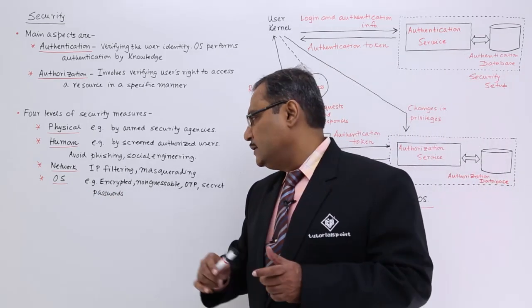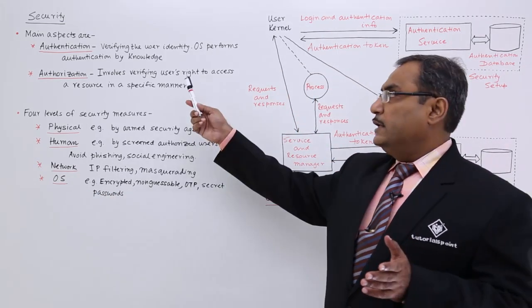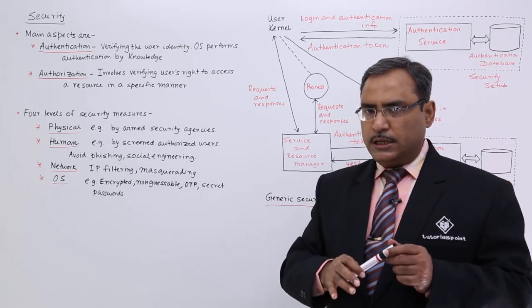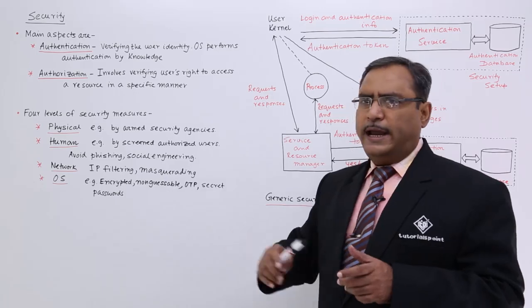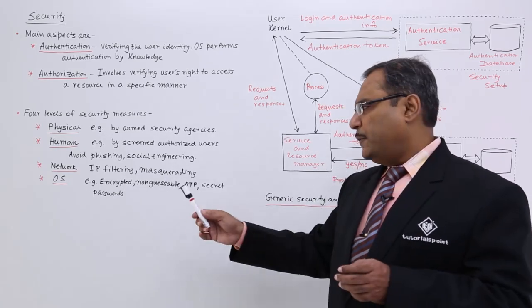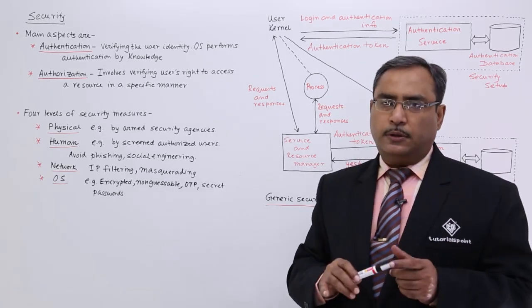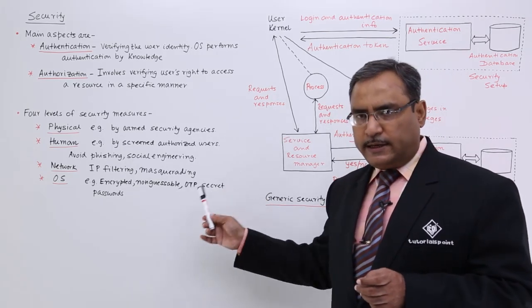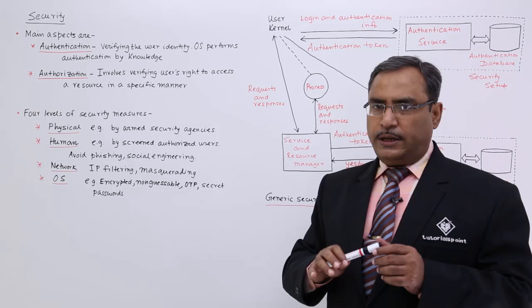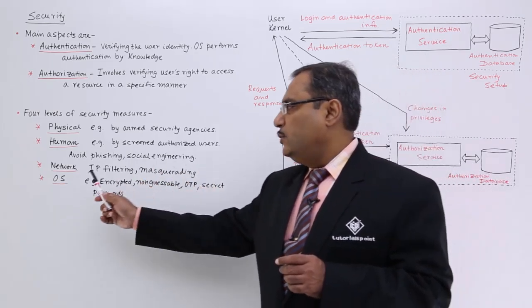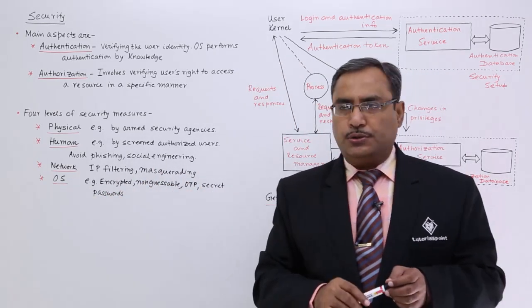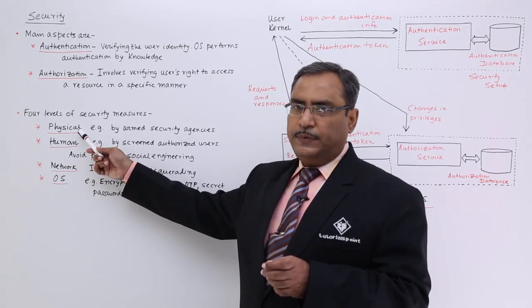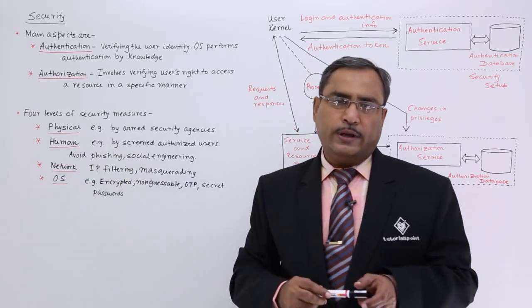That is another kind of security might be the OS, that means I know that in case of OS, it will have a knowledge to identify the users and it might be through some encrypted passwords. The password should be non-guessable. It might be one-time password, OTP. It might be should be very secret password and in this way, the OS security can also be ensured. So we are having four levels of security, one is the physical, next one is human, network and OS.